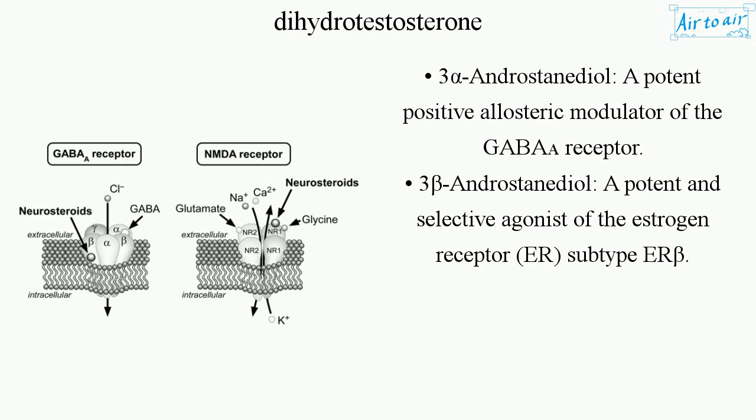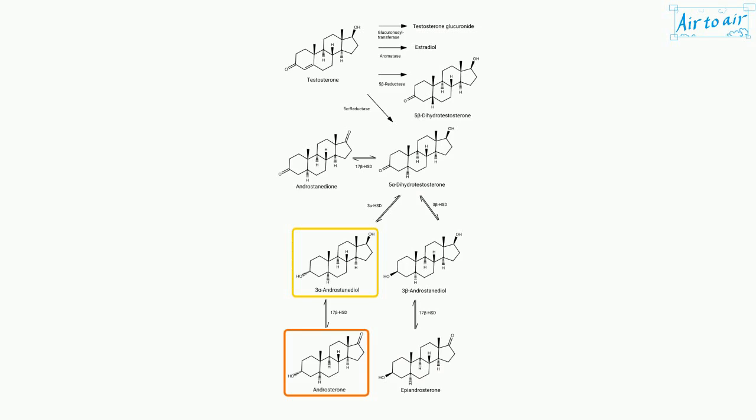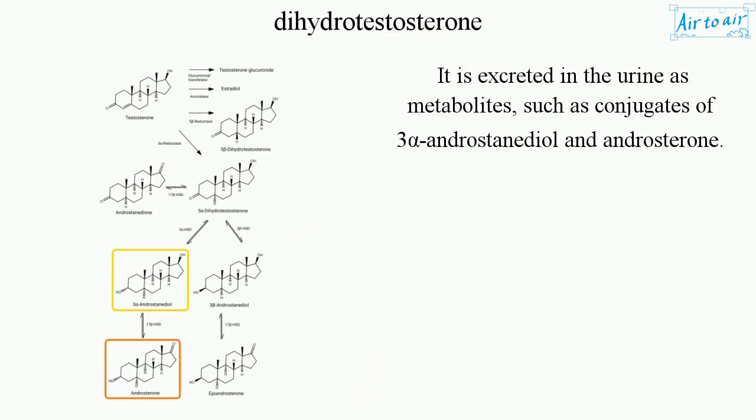3-beta androstanediol is a potent and selective agonist of the estrogen receptor beta subtype. DHT is excreted in the urine as metabolites, such as conjugates of 3-alpha androstanediol and androsterone.